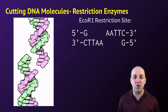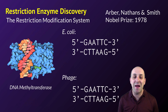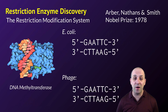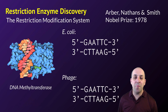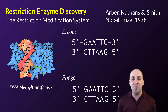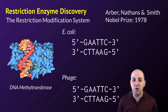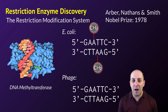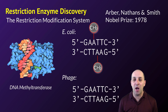Engineers didn't create restriction enzymes — they were first discovered in bacterial cells. One of the major threats to bacterial cells are bacteriophages, viruses that infect them and destroy their genomes. Restriction enzymes serve as a kind of bacterial immune system, finding sequences in the bacteriophage genome that they recognize and cutting the genome into segments so the DNA is no longer infective. DNA methyltransferases protect the host cell's genome by adding methyl groups to its bases — restriction enzymes cannot cut methylated DNA, only unmethylated DNA.